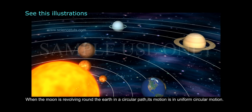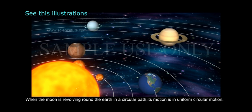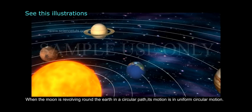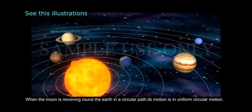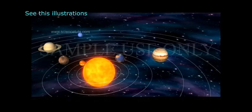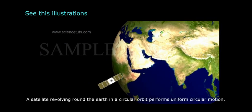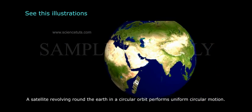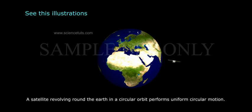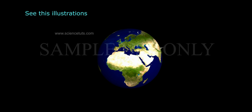See these illustrations. When the Moon is revolving round the Earth in a circular path, its motion is in uniform circular motion. A satellite revolving round the Earth in a circular orbit also performs uniform circular motion. These are the examples of uniform circular motion.